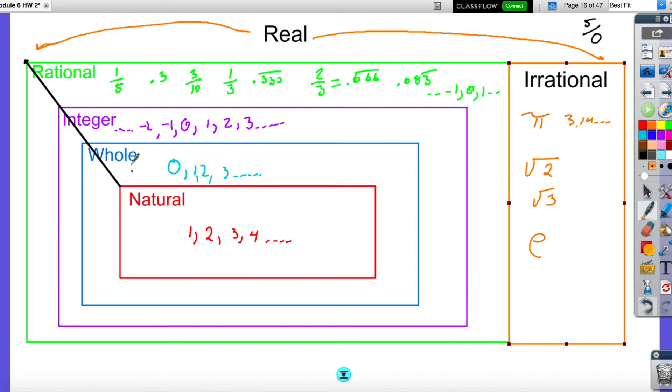So once again, if it's a natural number, it is also a whole number, integer, rational. If it is an integer, it is an integer, rational, real. If it's just a rational number, it's rational, real. And if it's irrational, it's also irrational, real.